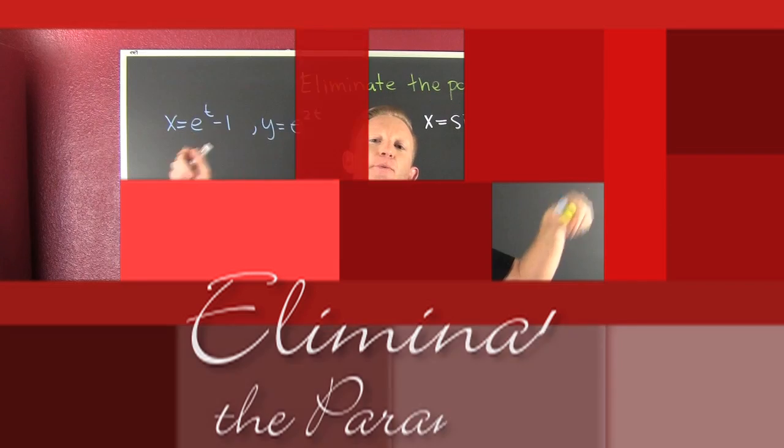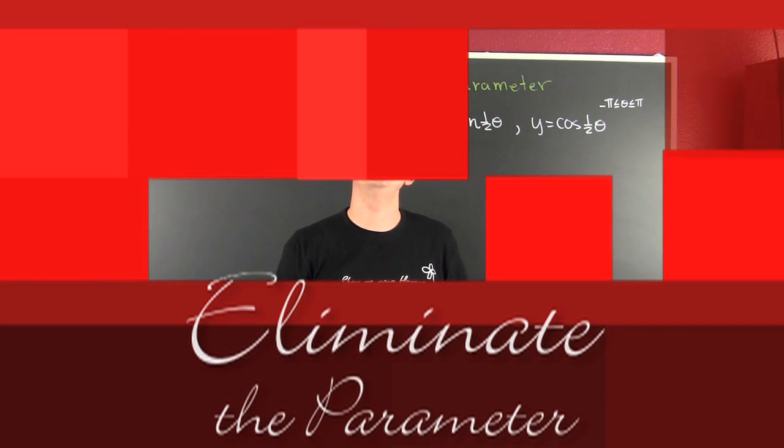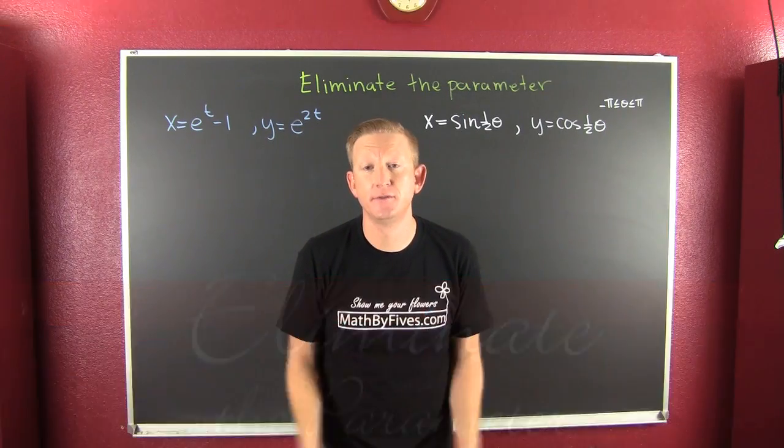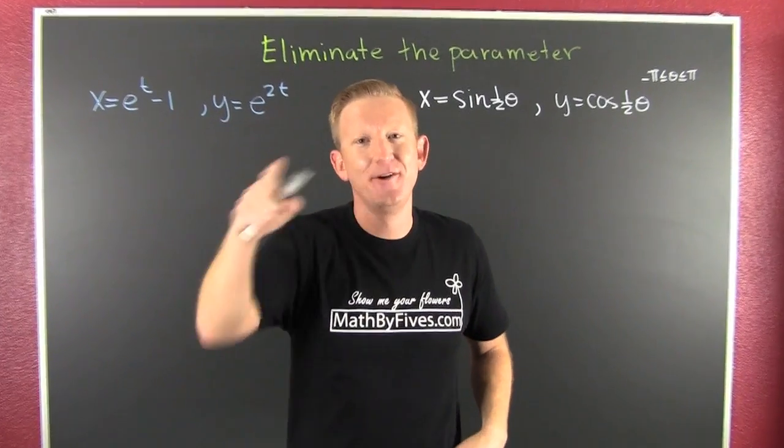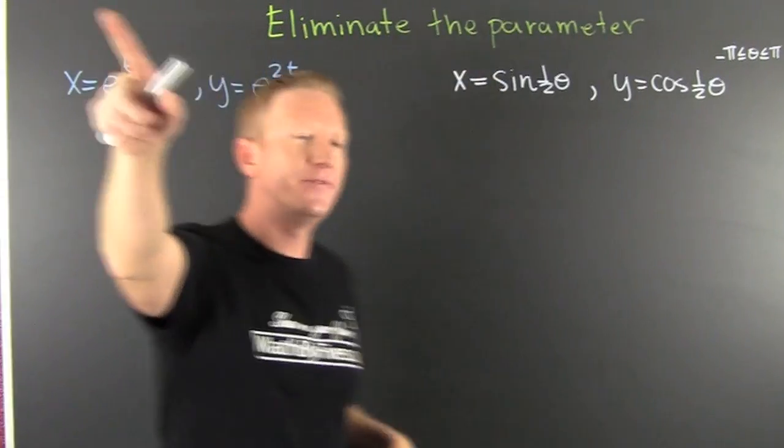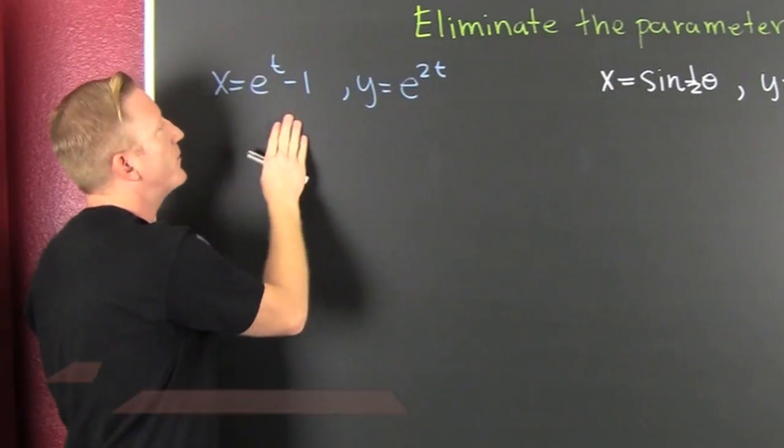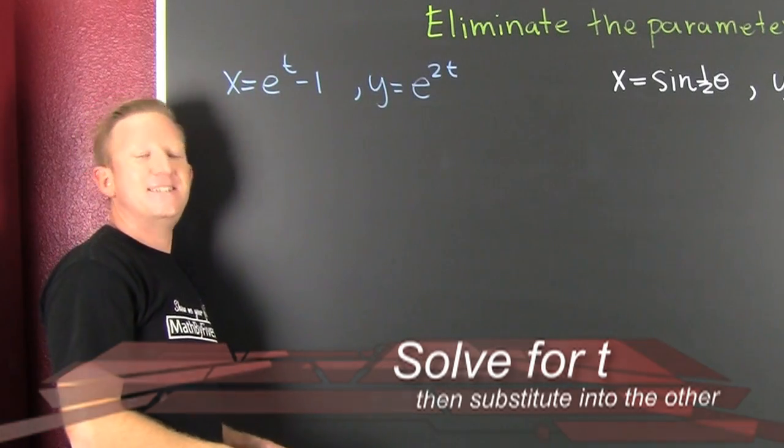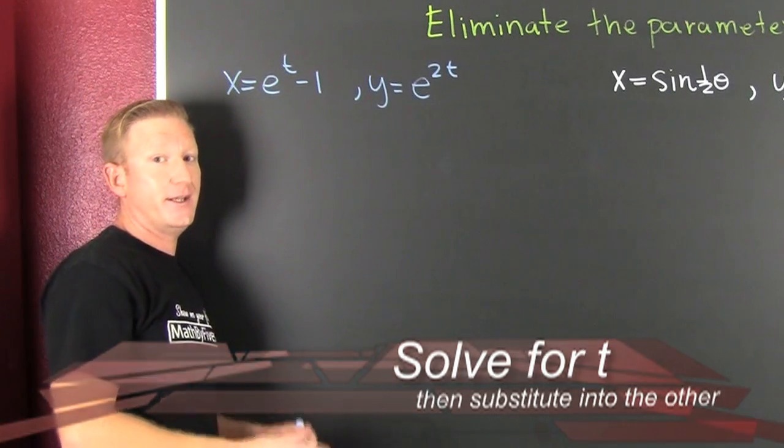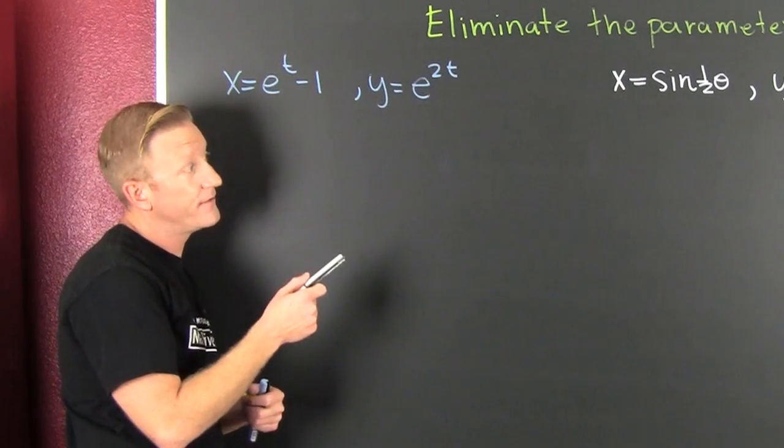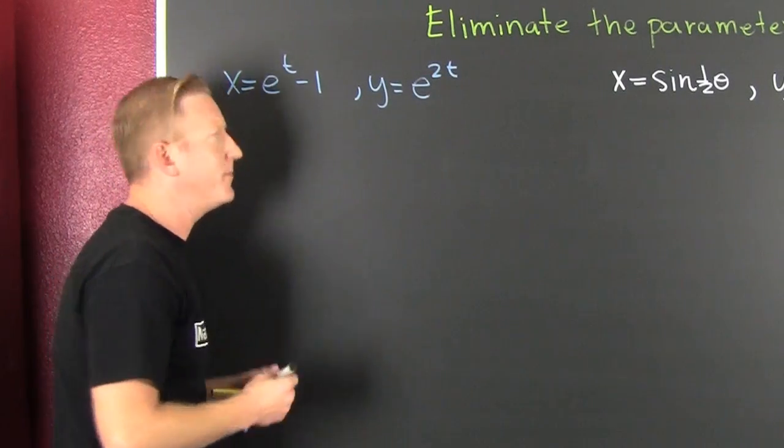All right, now what do we want to do? We want to eliminate the parameter and find the Cartesian coordinate extra. Graph it too. What are we going to do? We're going to take a traditional example first.